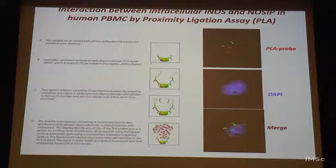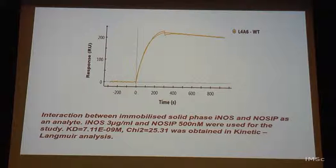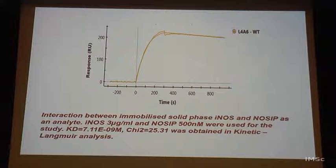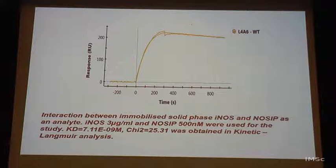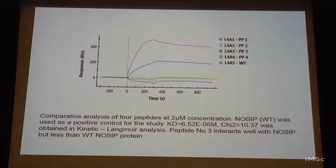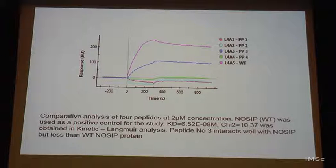We also demonstrated NOSIP–iNOS interaction using a cell-free system: we cloned and expressed iNOS and NOSIP separately, then performed SPR — surface plasmon resonance — where one molecule is fixed to a solid phase and the other flows in a liquid phase. A non-interacting molecule gives a flat trace; an interacting one shows a characteristic binding curve, giving both confirmation of interaction and a measure of its degree.